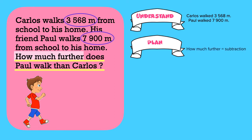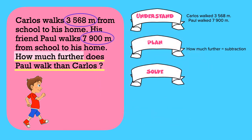Once we've understood what the problem is asking us to do, now we must plan. We look at the problem to identify keywords that will tell us which strategy to use. Here, the keyword is 'how much further.' How much further tells us that we will be using the operation of subtraction. Now that we know which strategy to use, let's set up our subtraction problem.